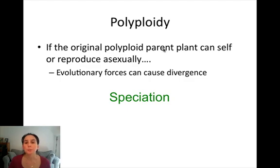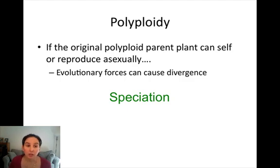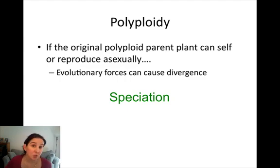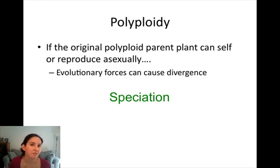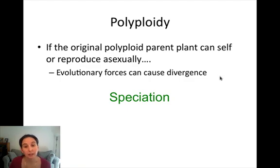This results in those tetraploid individuals being reproductively isolated from the diploids. Now, if the original polyploid plant can self-fertilize or reproduce asexually — as is common in plants — and produce offspring, then evolutionary forces can act on those offspring and you often get speciation pretty quickly in many different plant populations. This is a really important process.